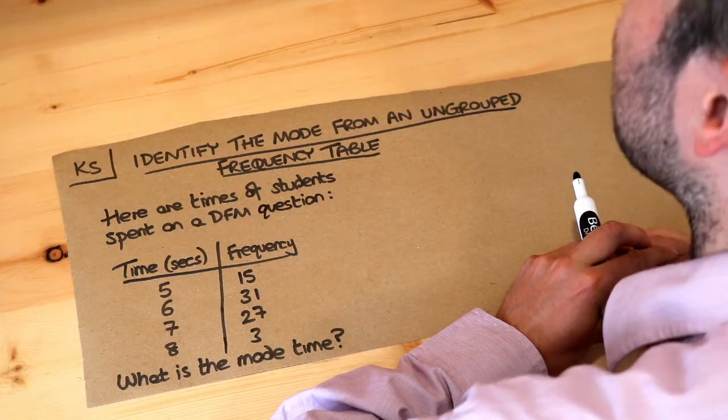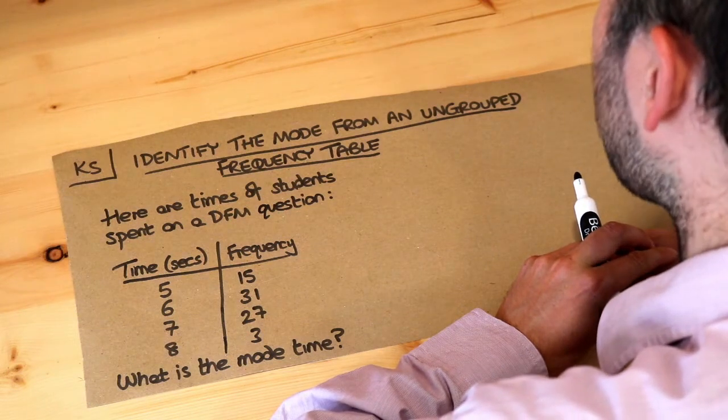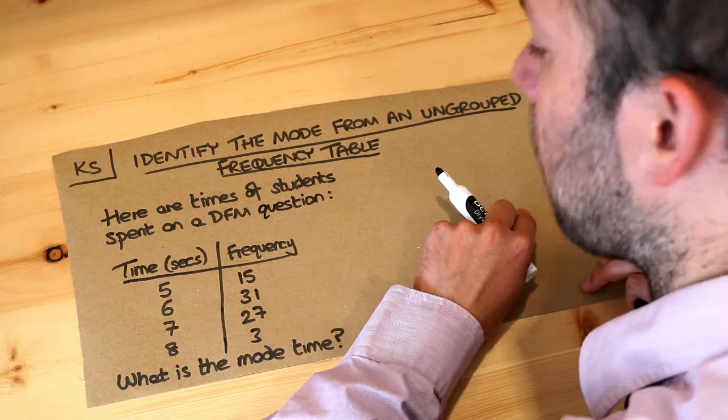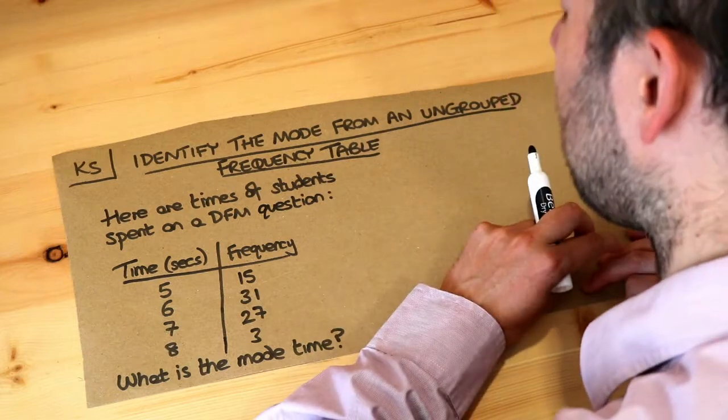Hello and welcome to this Dr Frost Maths key skill video on identifying the mode from an ungrouped frequency table. So you've got the times the students spent on a DFM question. It must be a very quick question because they only took 5 to 8 seconds.